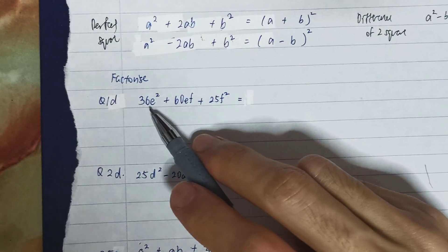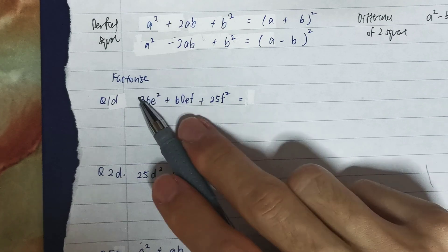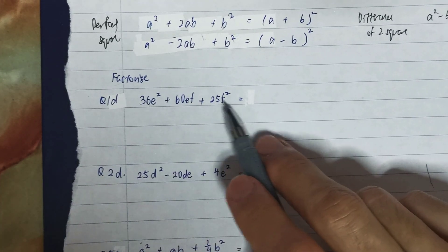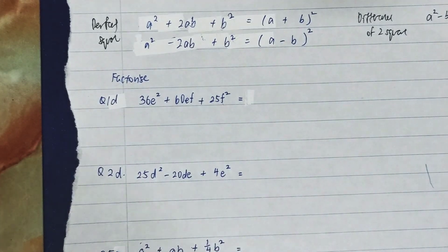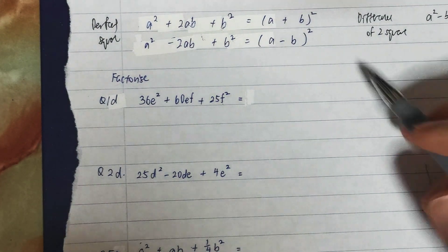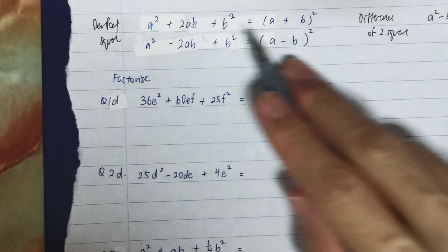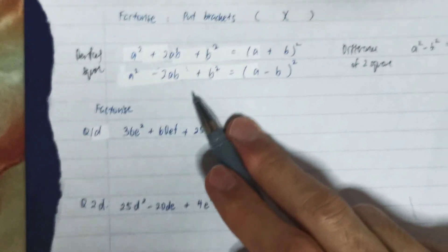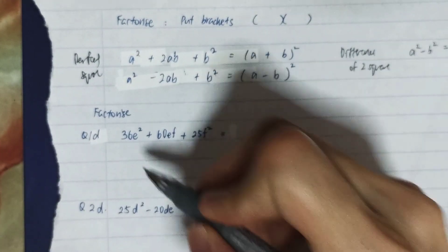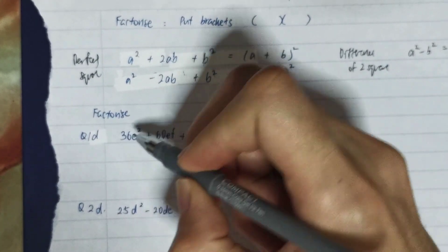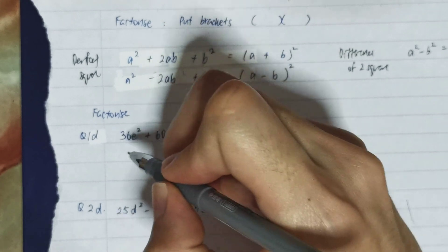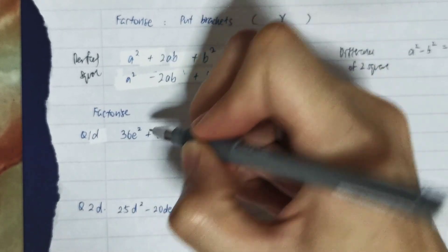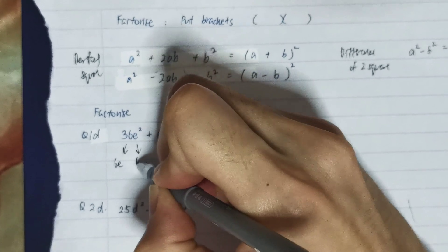In this case, we have to check whether the numbers, the last and the third number, are square numbers or not. If they are square numbers, there's a higher chance that you can just use the special identity formula. Let's check: 36e² if I factorize it into the individual square root numbers it will be 6e times 6e.